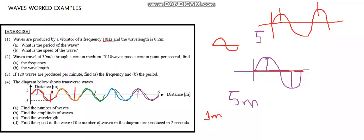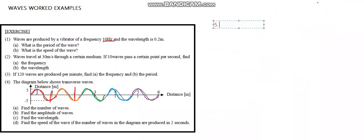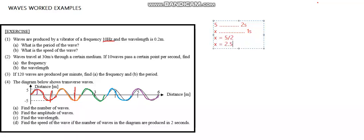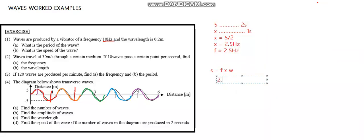Find the speed of the wave, given that the five waves in the diagram are produced in two seconds. First, we find the frequency: five waves in two seconds means X waves in one second. Cross multiplying gives X equals 2.5 hertz. So frequency is 2.5 hertz. Speed equals frequency times wavelength, so speed equals 2.5 times 1 meter, giving 2.5 meters per second.